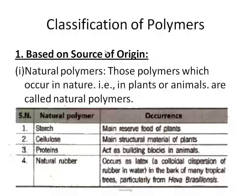Now we go for the classification of polymers. There are different types of classification, and we will study them one by one. The first classification is based upon the source of origin — that means from where we are getting the polymer. Under source of origin, the first type is called natural polymers, meaning polymers which are obtained naturally, occurring in nature in plants or animals.